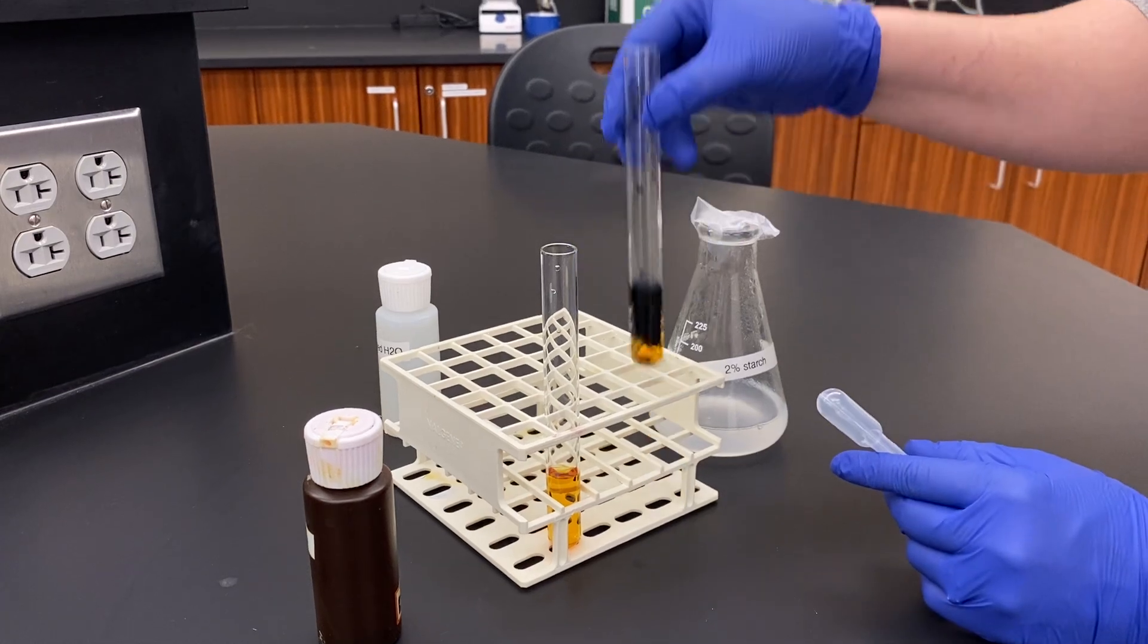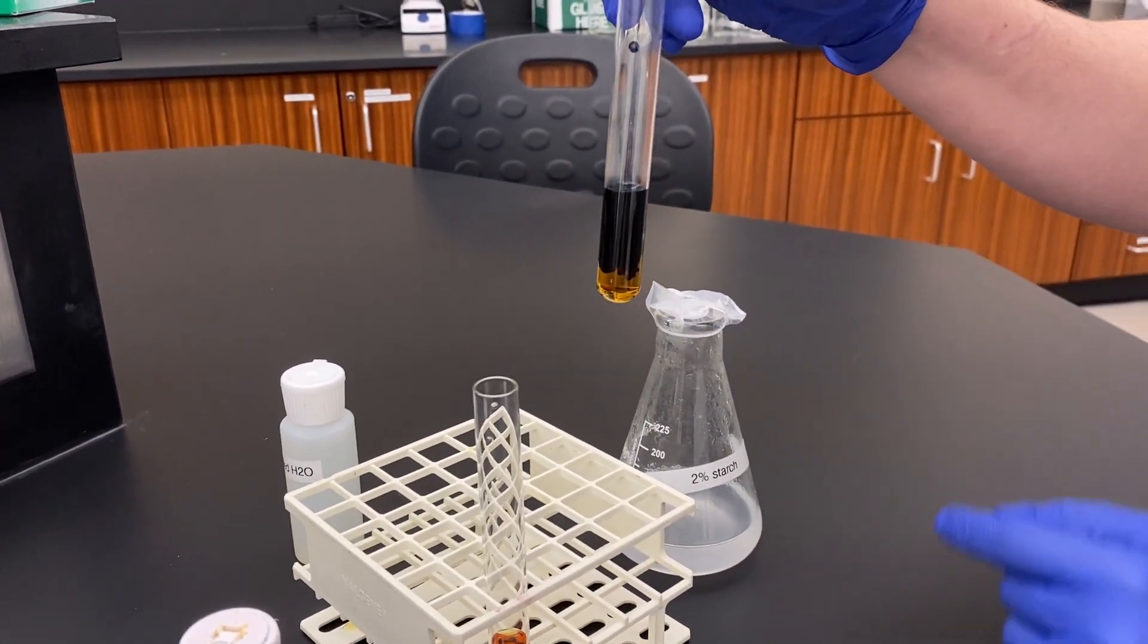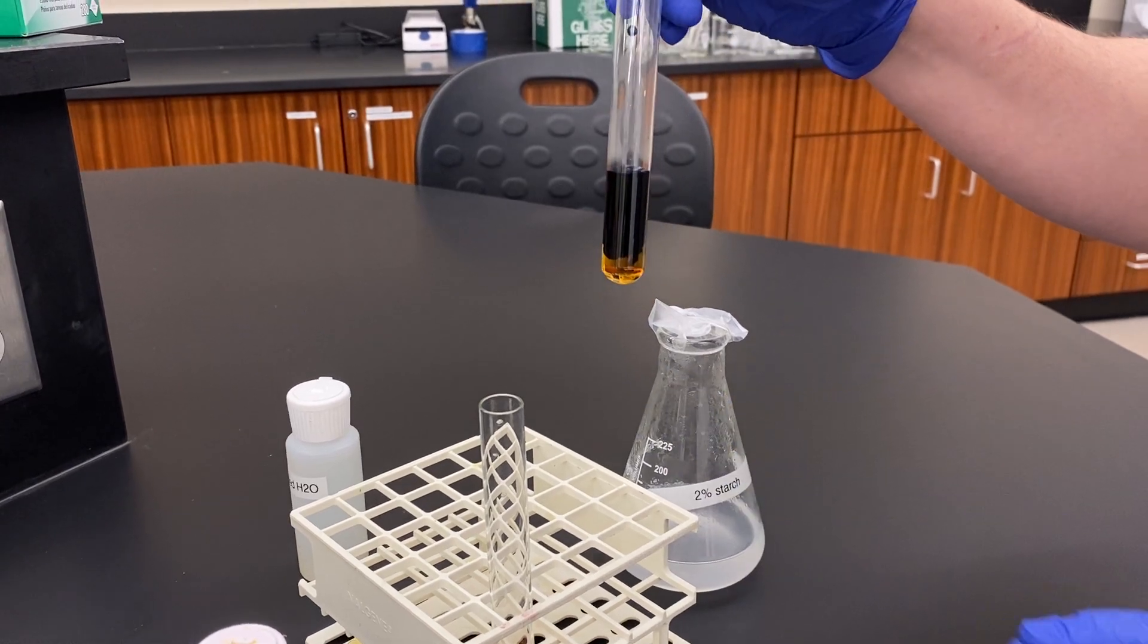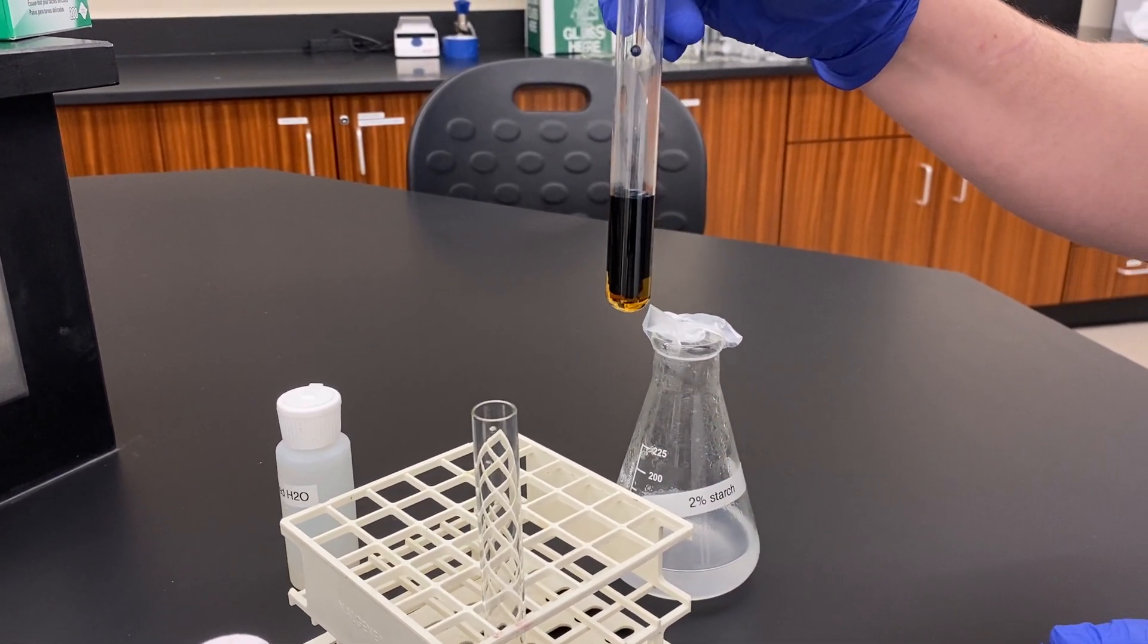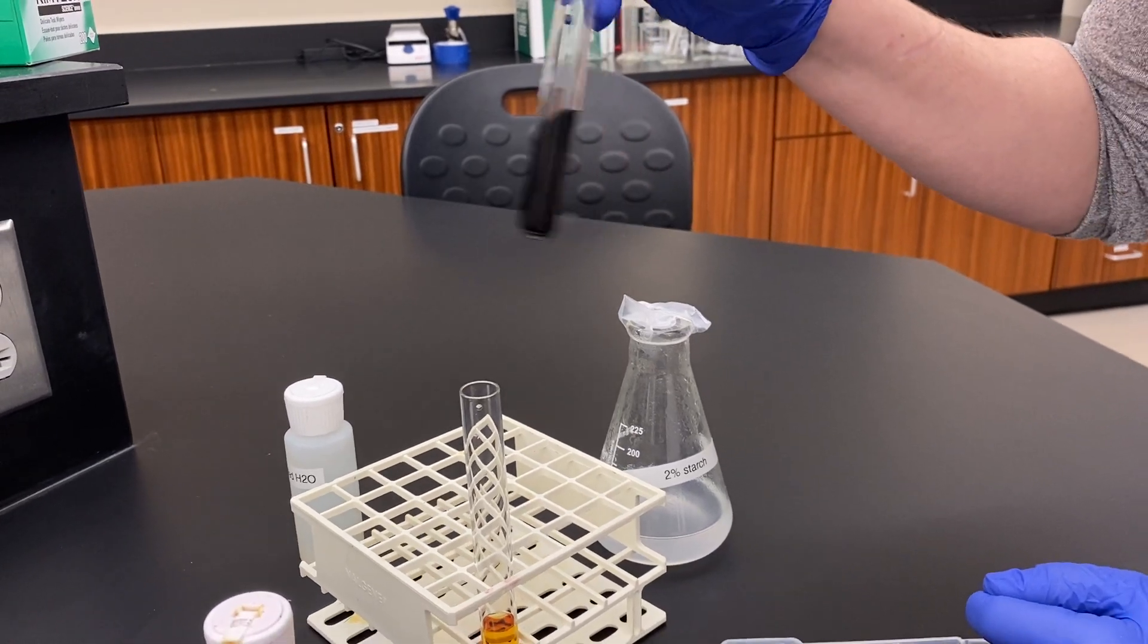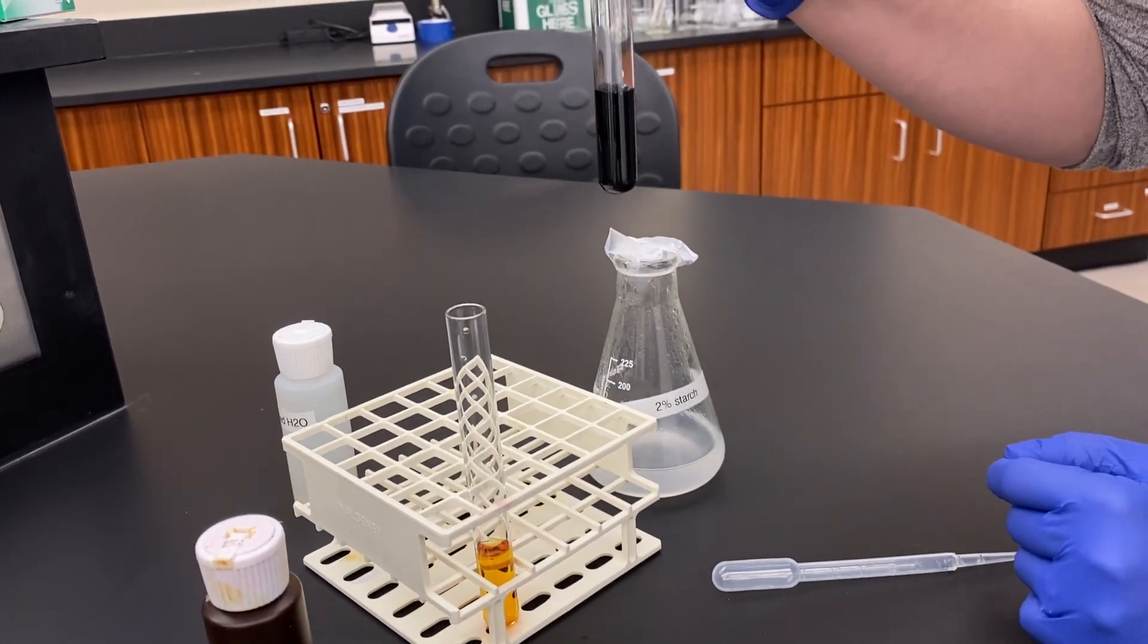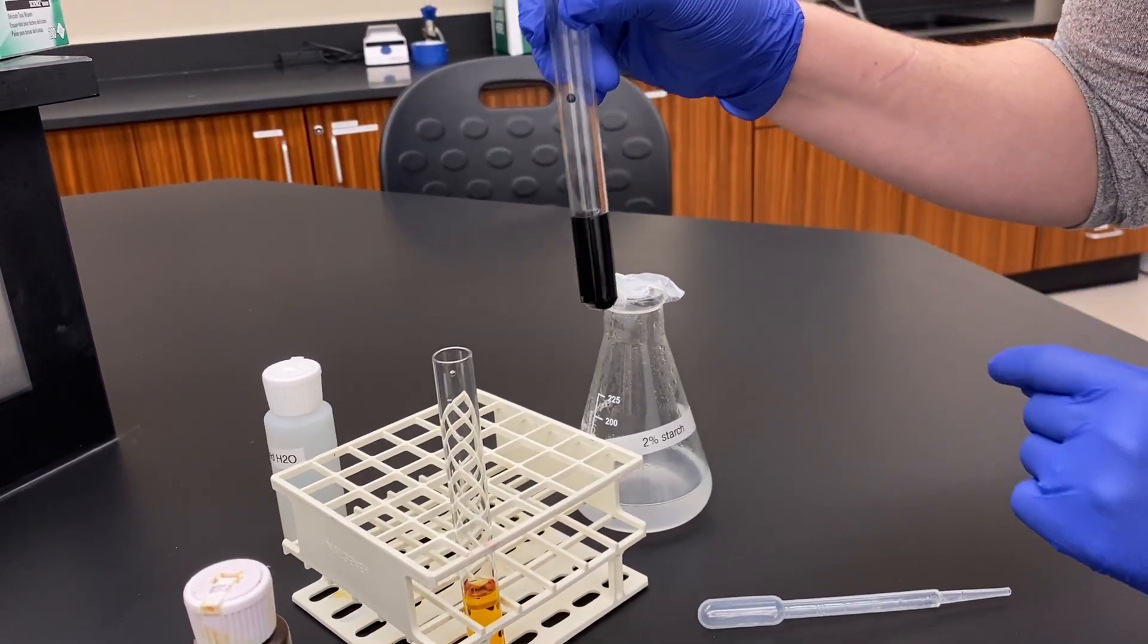And you can see actually the gradation of where the starch hasn't reacted yet. If I were to shake this up, the whole tube is going to turn that blue-black kind of color. So if I shake it up, it fully interacts with all the iodine and we get a very deep blue-black color. That is telling you that you have the presence of starch.